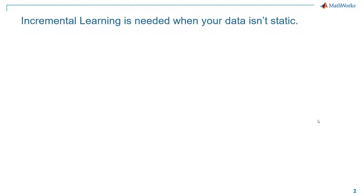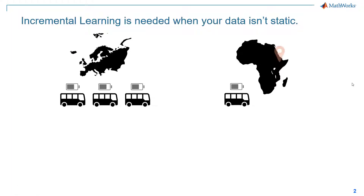To illustrate, let's look at deploying a battery state of charge estimation across a fleet of vehicles in different geographies. Batteries and how fast they discharge are sensitive to the temperature. The temperature distribution is very different between a moderate climate like Europe, shown on the left, and the heat of the African desert. Your battery monitoring system needs to take that into account, and you may want to adapt the generic model to the operating conditions where a vehicle actually is used.